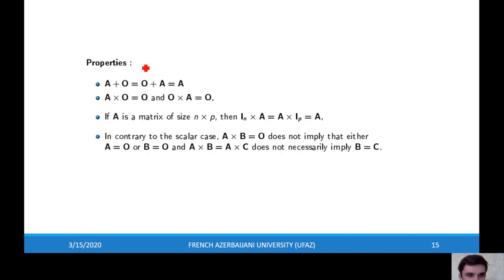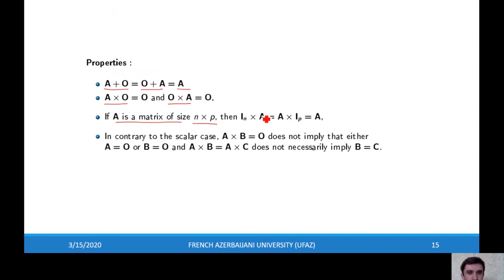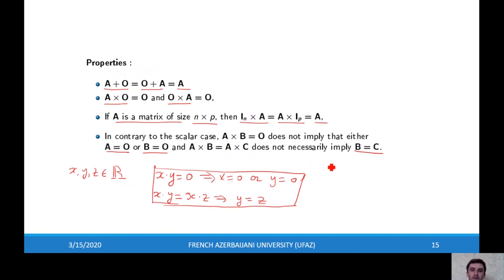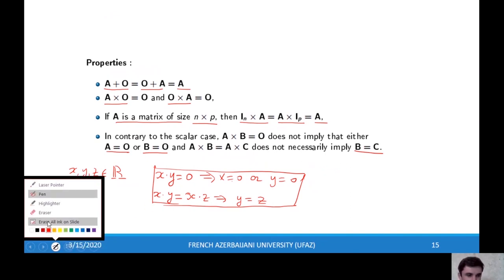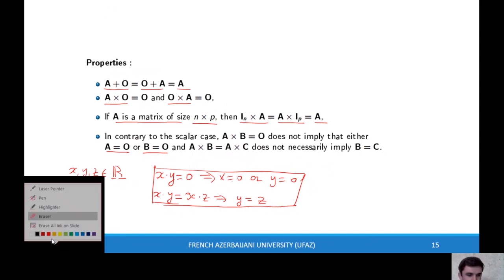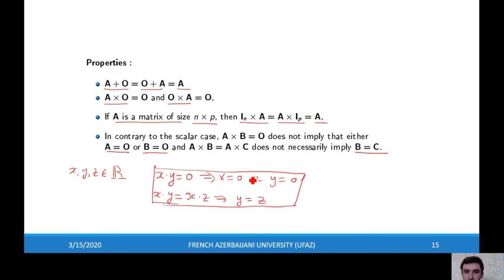Let's look at some properties of sum and multiplication of matrices. A + 0 = 0 + A = A. A times the null matrix equals the null matrix. If A is a matrix of size n times p, then the n-size identity matrix times A equals A times the p-size identity matrix equals A. Also, AB = AC does not necessarily imply B = C.